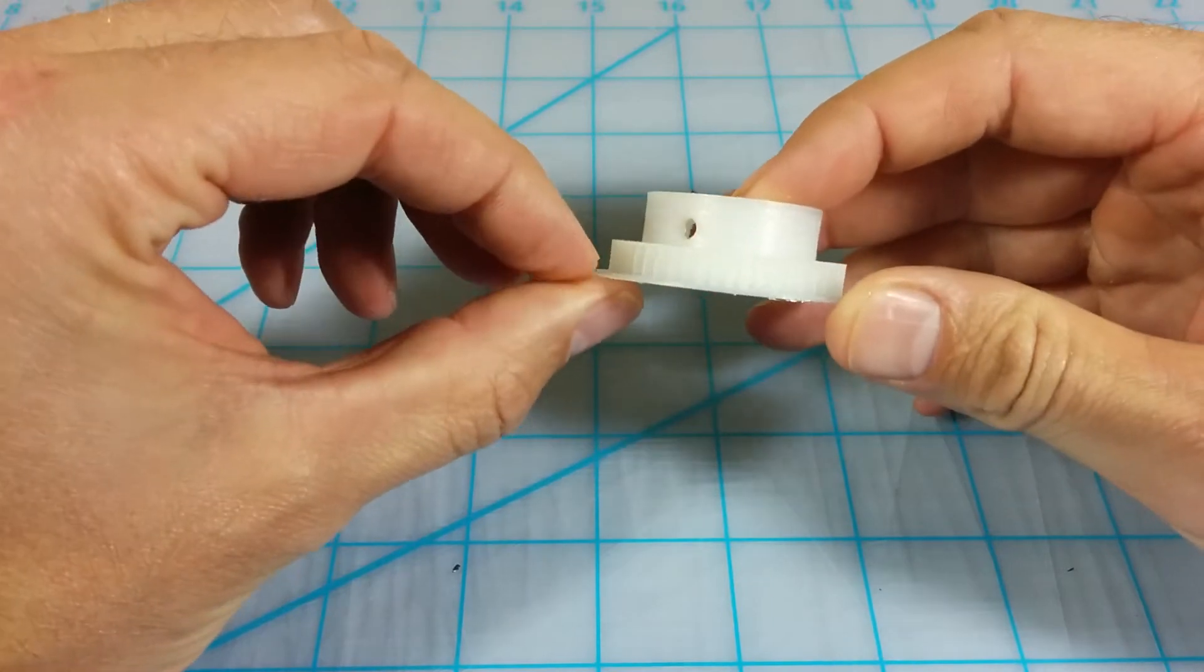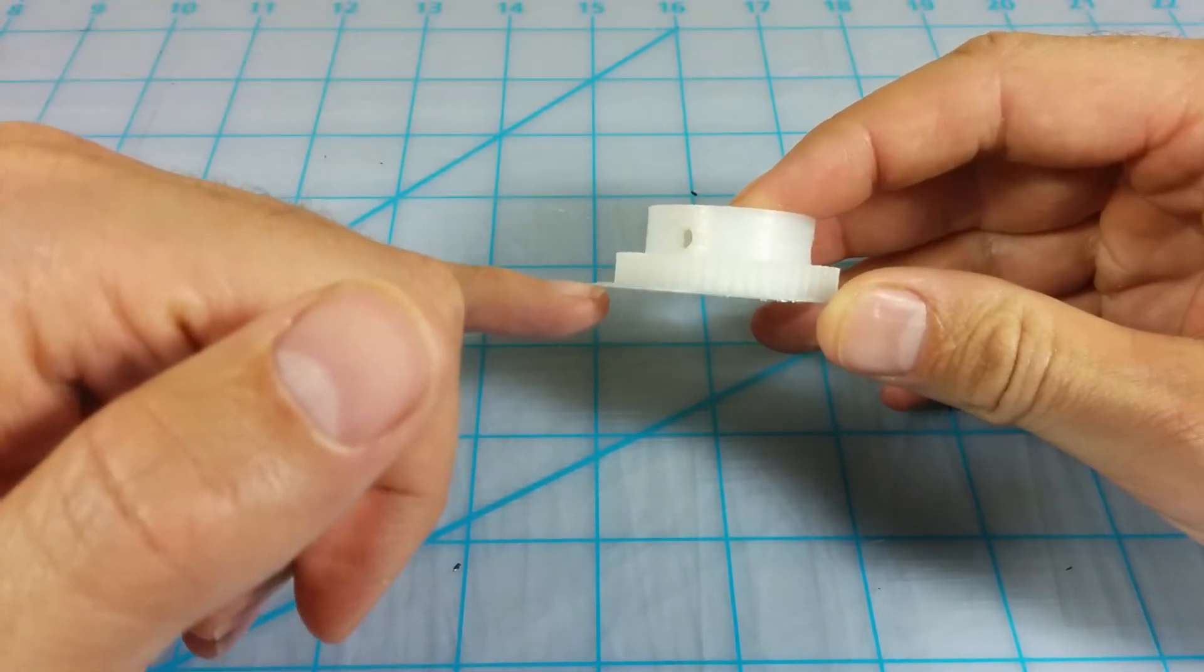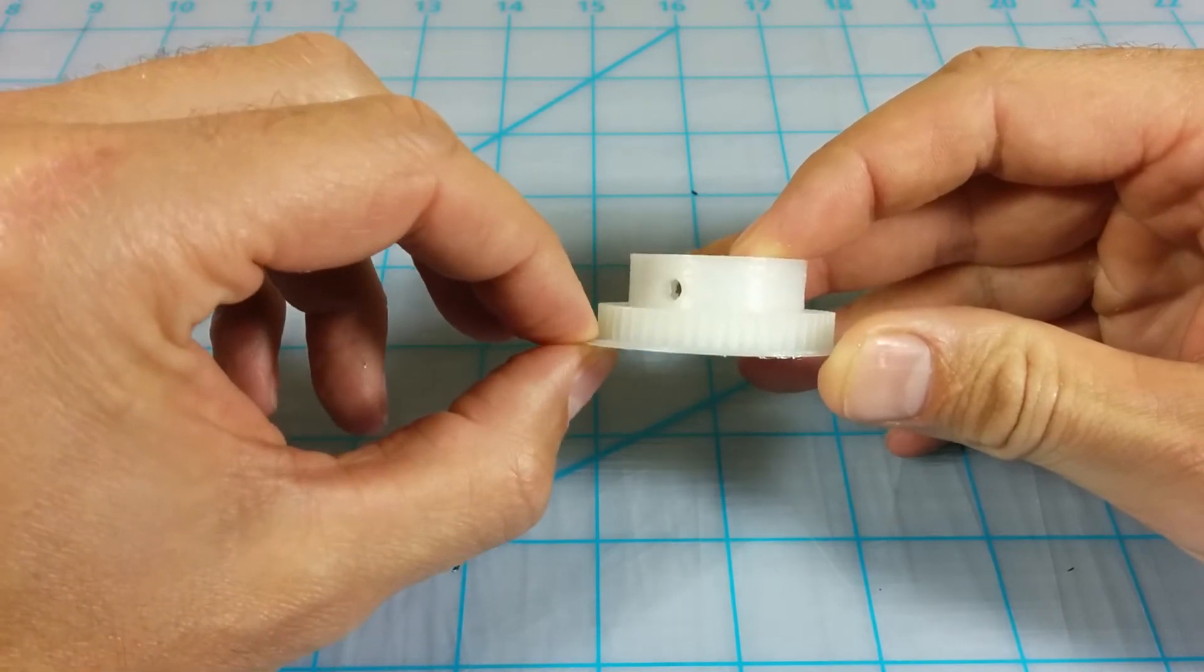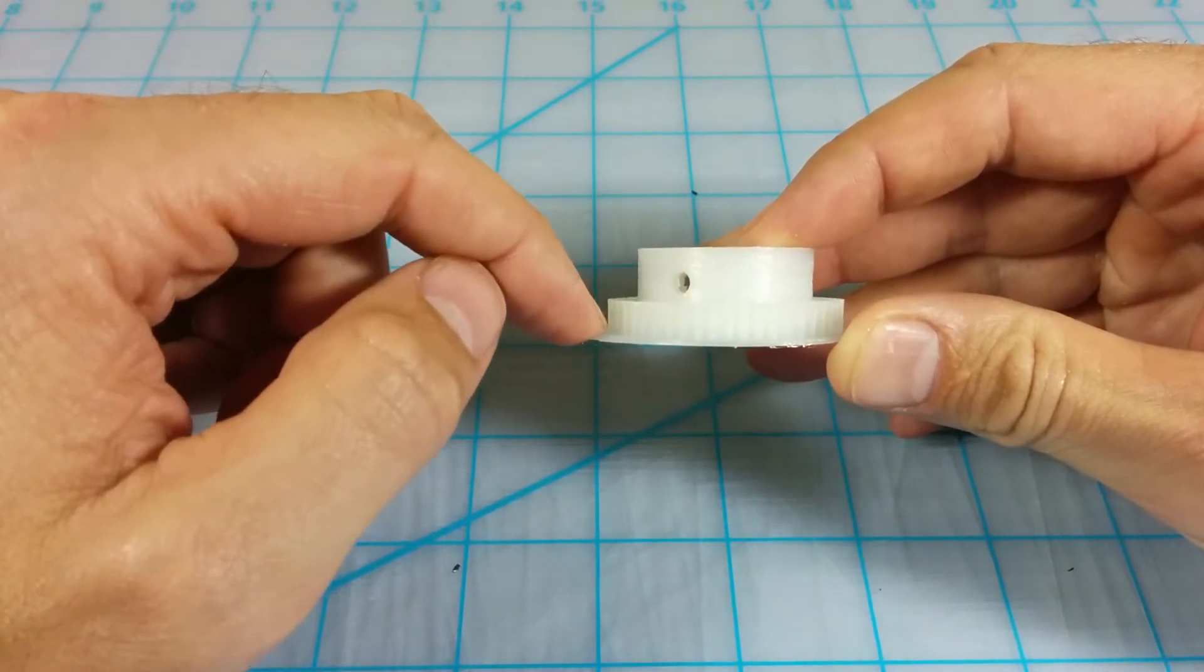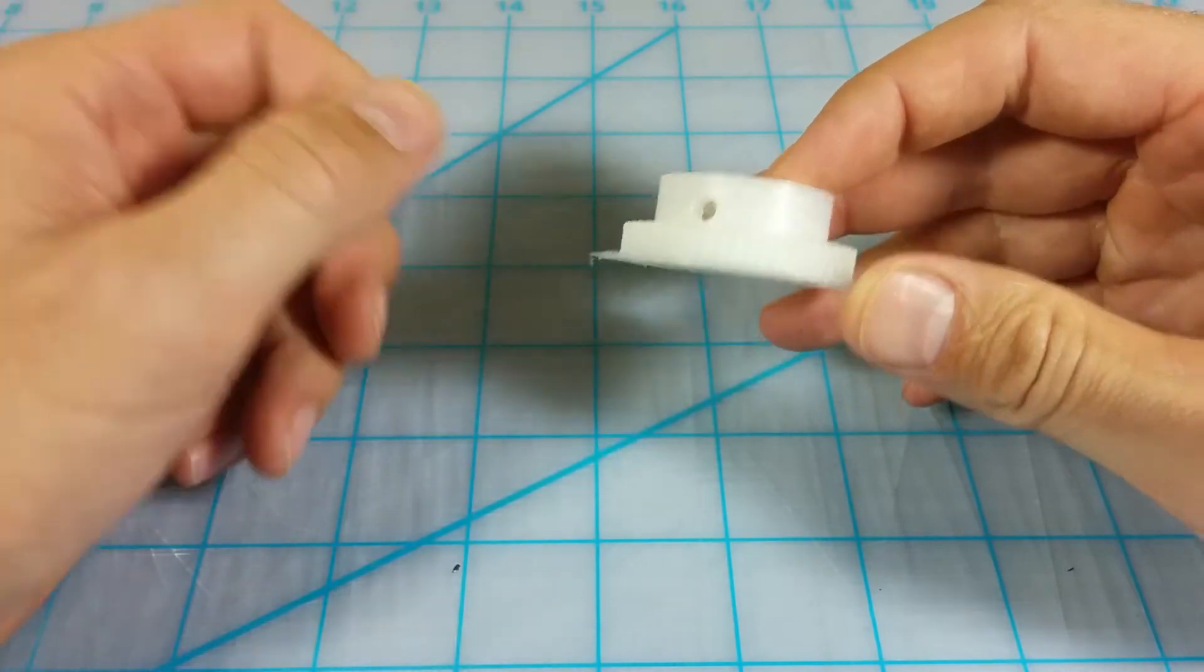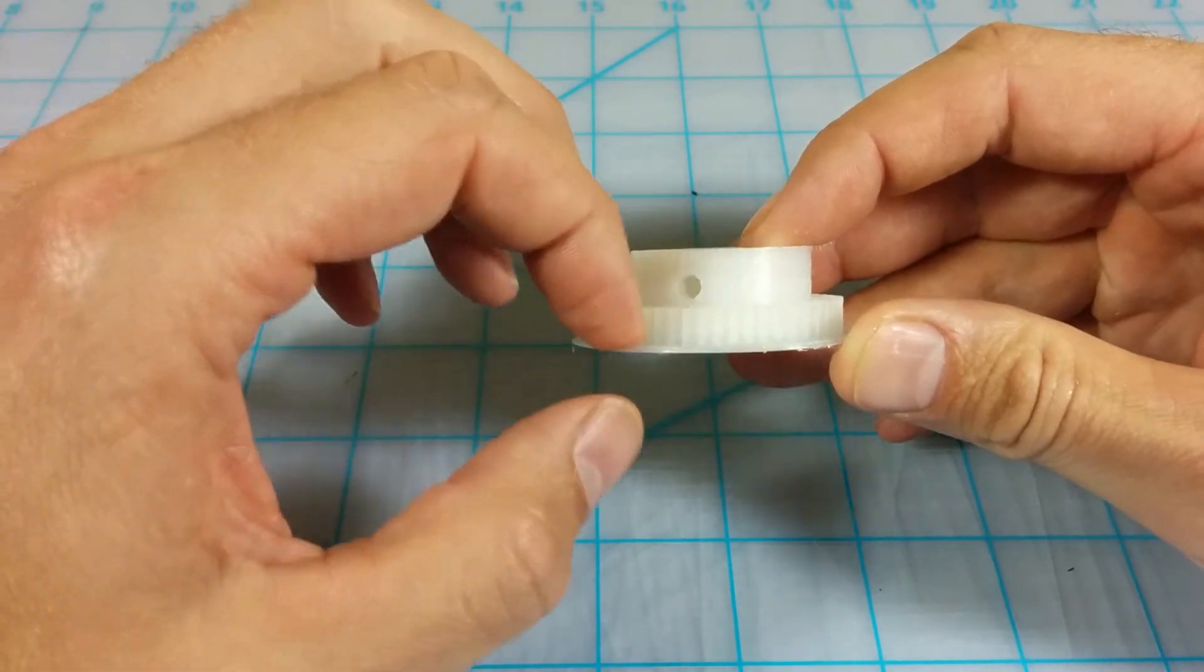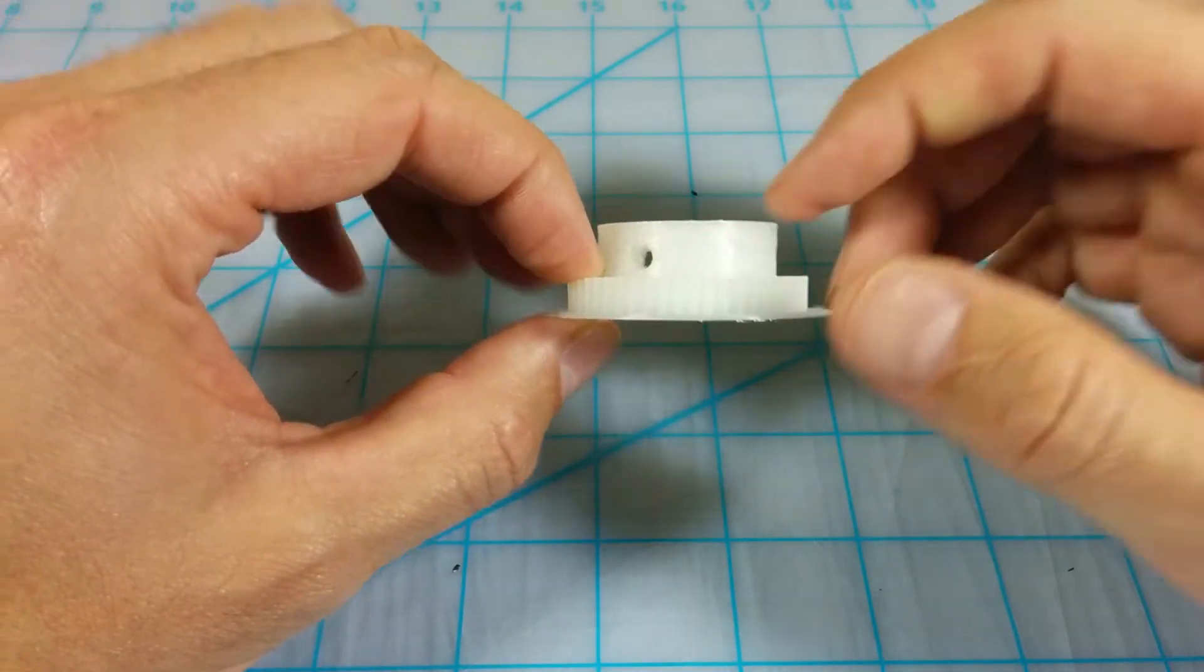but basically, I'm printing at normal print temperatures for the raft layer, and then knocking the first layer of the part down about 15 degrees Celsius, so 245 for the brim, then down to 230 for the very first layer of the part,